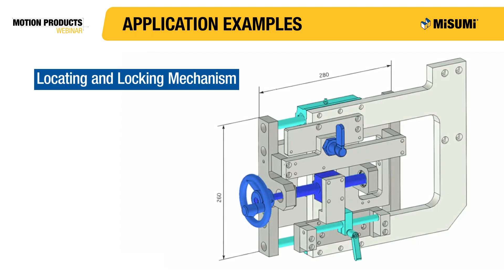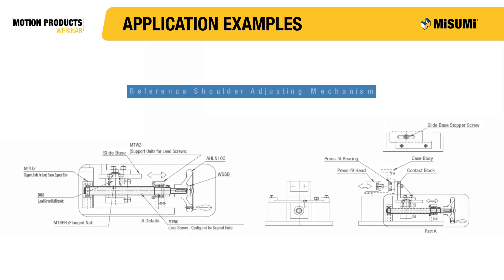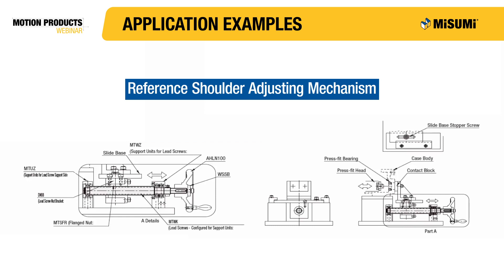In this application, much like the first, a lead screw and hand wheel allow for manual positioning of the mechanism. This is a manually operated unit — a reference shoulder adjusting mechanism — that moves a contact block back and forth. The rotational speed is very small as the hand wheel is turned by hand, and as the contact block comes into contact with the pressed fit head, neither absolute positioning accuracy, nor repeatability, nor backlash is critical. Because of this, a lead screw is a very appropriate component for use in this type of application, as the added expense of a ball screw is not justified.